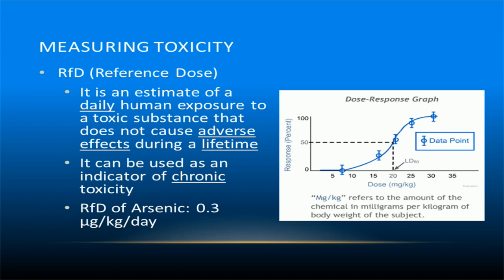On the other hand, toxicity may be measured as a reference dose. This is an estimate of a daily human exposure to a toxic substance that does not cause adverse effects during a lifetime. Reference dose is an indicator of chronic toxicity, meaning that if you exceed the amount of exposure to a toxic substance over the reference dose, it may eventually cause adverse effects. For instance, if you were to consume 0.3 micrograms of arsenic per kilogram of body weight a day, you probably won't experience any negative effects. For a 77 kilogram person, this adds up to 23.1 micrograms a day. However, I would strongly advise that you don't willingly do this to yourself. For the dose response graph on the right, the reference dose would represent the part of the curve to the left at the first data point, around 8, while the median dose corresponds to about 20, where the response of the substance is around 50%.